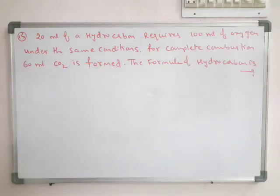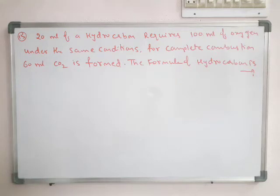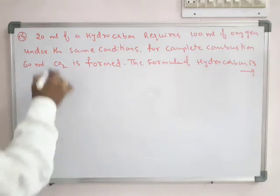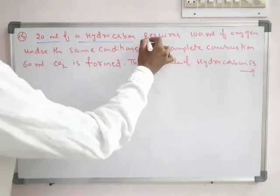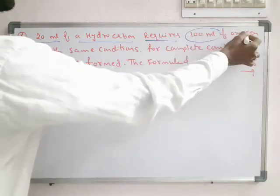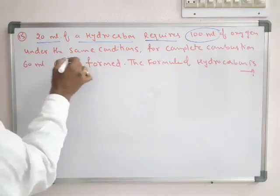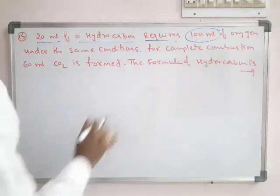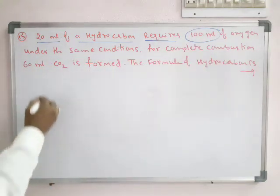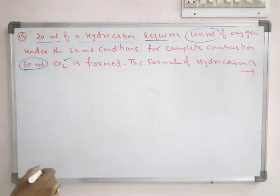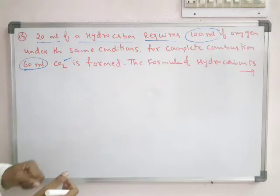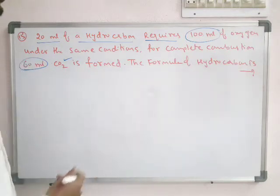This is a very important problem. This type of problem we do in idiometric calculations. It is given: 20 millilitres of a hydrocarbon requires 100 millilitres of oxygen under the same conditions for complete combustion, and 60 millilitres of carbon dioxide is released. So what is the formula of that hydrocarbon?